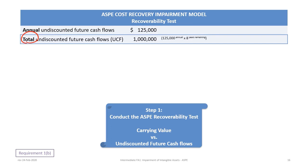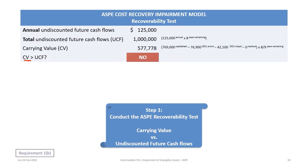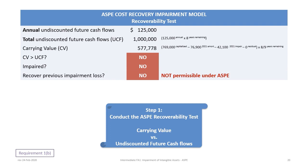This results in total undiscounted future cash flows of $1,000,000 ($125,000 annual × 8 years). The carrying value is calculated from the original cost of $769,000 minus the 2021 amortization of $76,900, less the impairment of $42,100, giving $650,000. Multiplied by 8/9 years remaining, the carrying value is $577,778. Since the carrying value of $577,778 is less than the undiscounted future cash flows of $1,000,000, impairment does not exist.